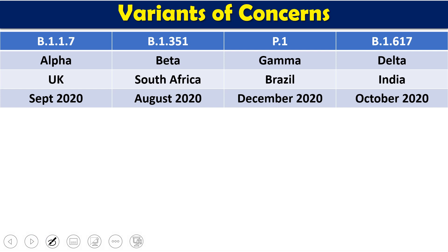Because of these protein changes, many variants have come into the picture. Some variants have been classified as variants of concern. According to WHO, a variant of concern translates to a rise in transmissibility, increased fatality, and a significant decrease in the effectiveness of vaccines, therapy, or other health measures.